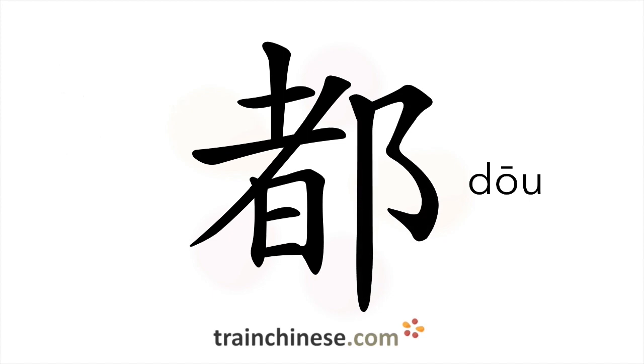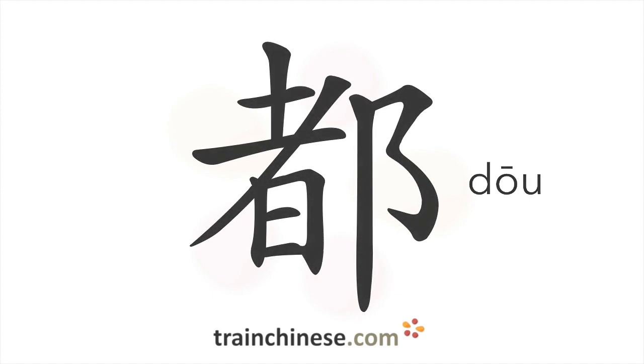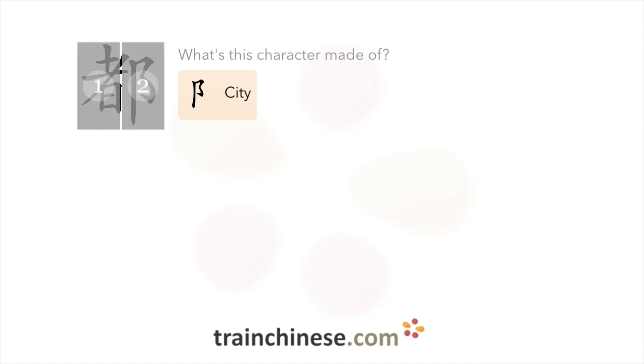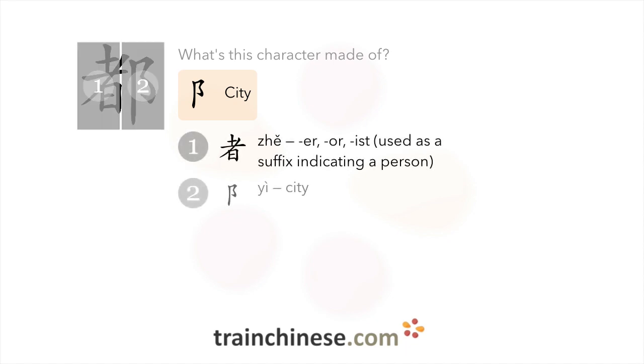Let's look at what goes into this character. The radical means city or place: 折, 易.